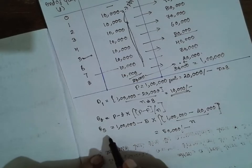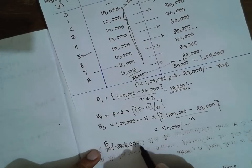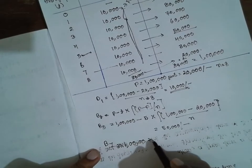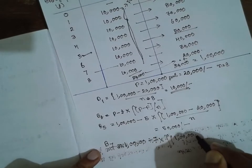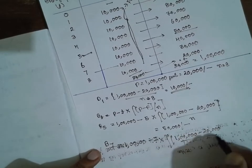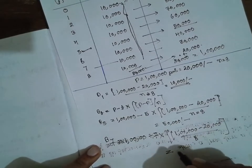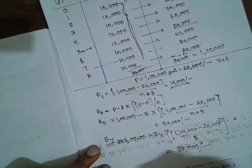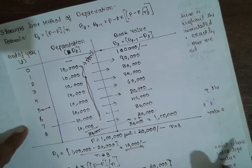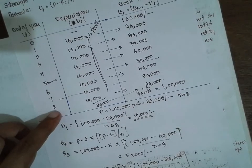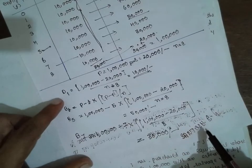Similarly, for the seventh year: B7 = 1,00,000 − 7 × (1,00,000 − 20,000) / 8 = Rs. 30,000 directly. This is the straight line method of depreciation. I am Santosh Gaidankar. Thank you very much.